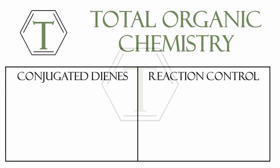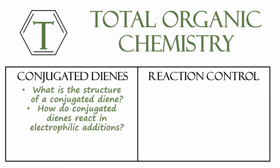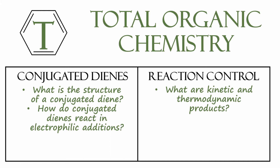Hello everyone, and welcome back to another episode of Total Organic Chemistry. In this video we'll be looking at conjugated dienes — molecules with two conjugated double bonds — and also some types of reaction control. The questions you should be able to answer at the end of this video are: what is the structure of a conjugated diene, how do these dienes react in electrophilic additions just like regular alkenes, what are kinetic and thermodynamic products, and how do I favor those products one over the other.